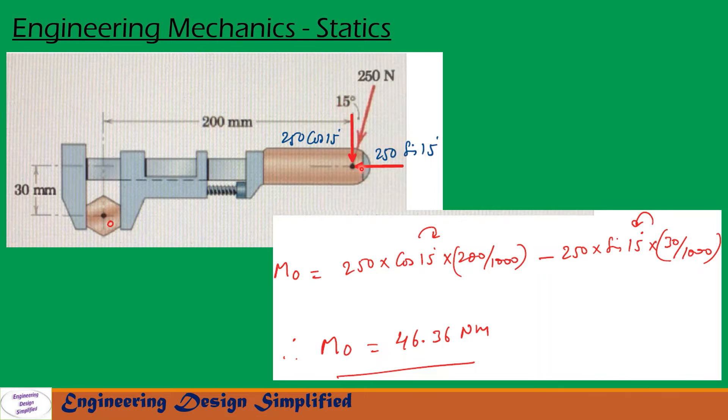Now let us take moment about O due to these two forces. The moment Mo equals the moment due to this vertical component and this distance of 200. This force will create clockwise moment, so that is written here: 250 cos 15 times 200 divided by 1000. The 200 is in millimeters and divided by 1000 to convert this into meters.